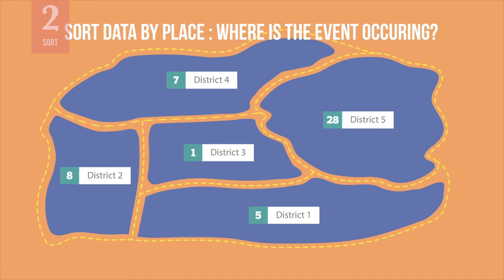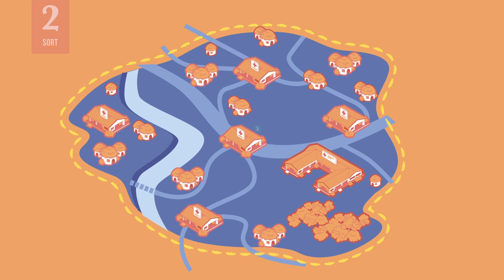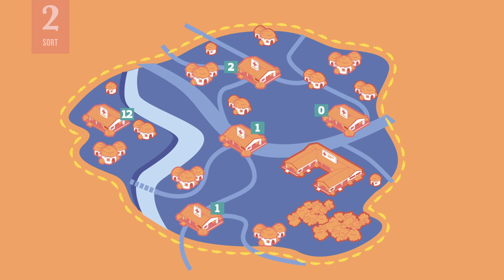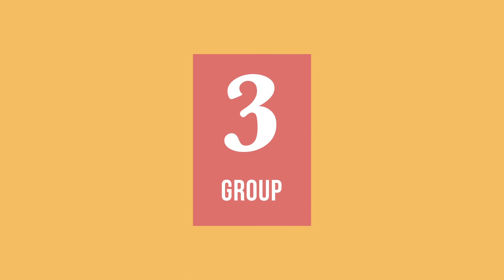Sort data by place to see where AEFIs are occurring. This spot map shows AEFI cases in five different districts. Assuming that all districts have about the same population, you might recommend that District 5 is prioritized for AEFI investigation. You would do the same for health facilities within a district — at the district level, sort by specific clinics and health facilities reporting the AEFI.